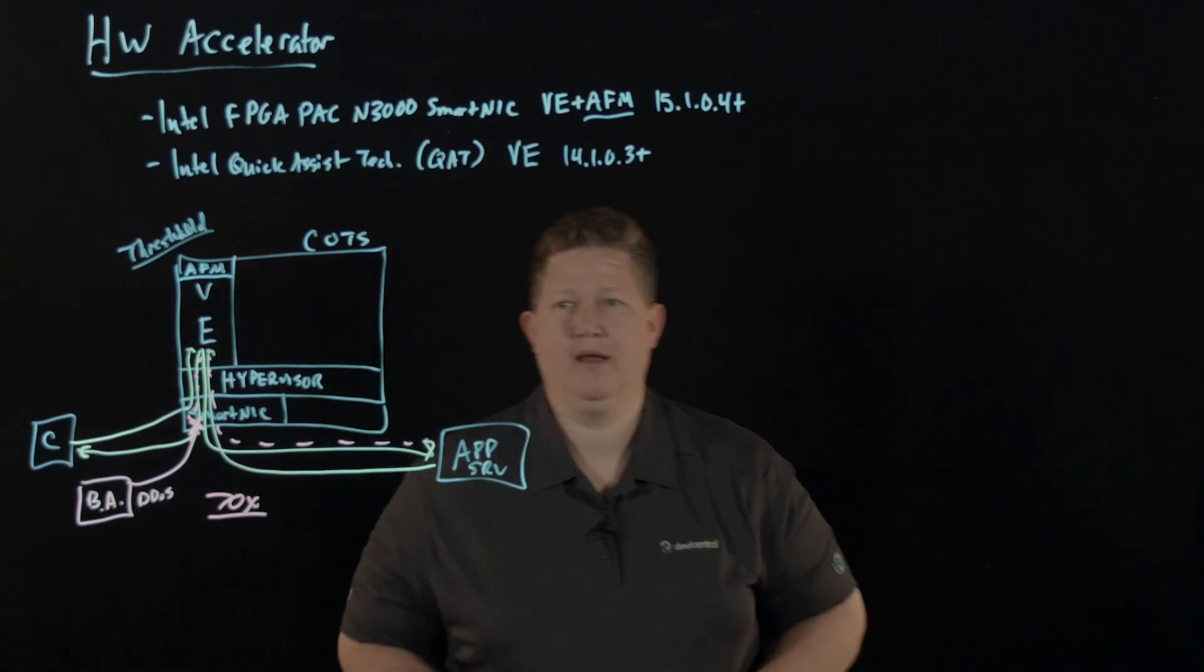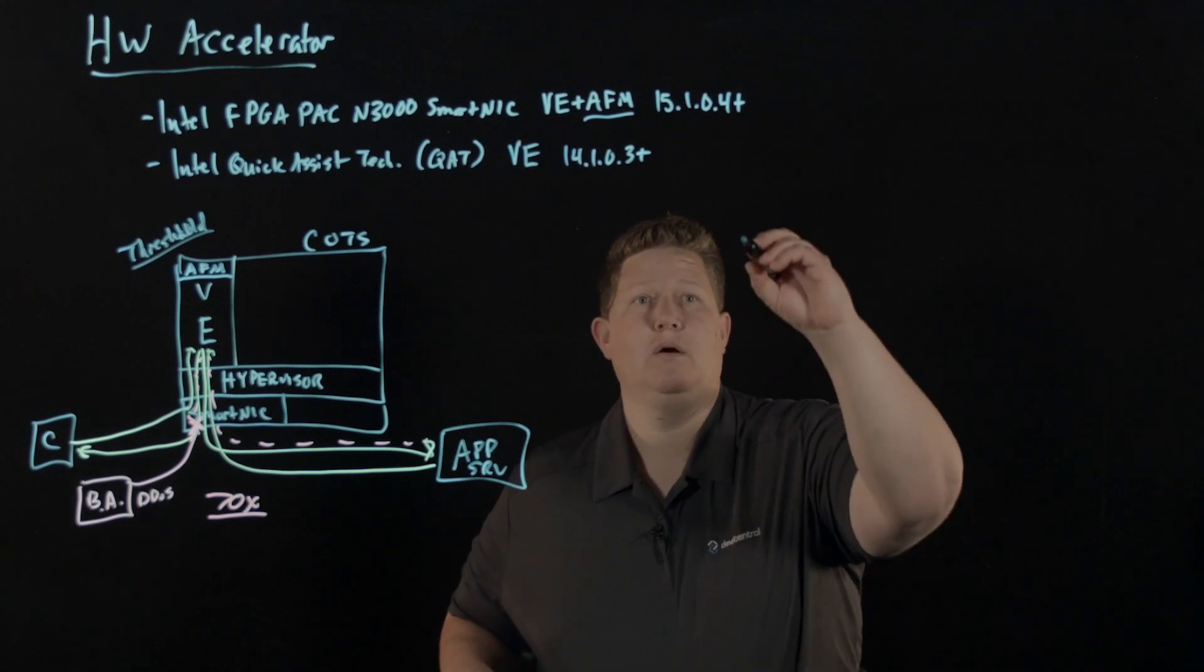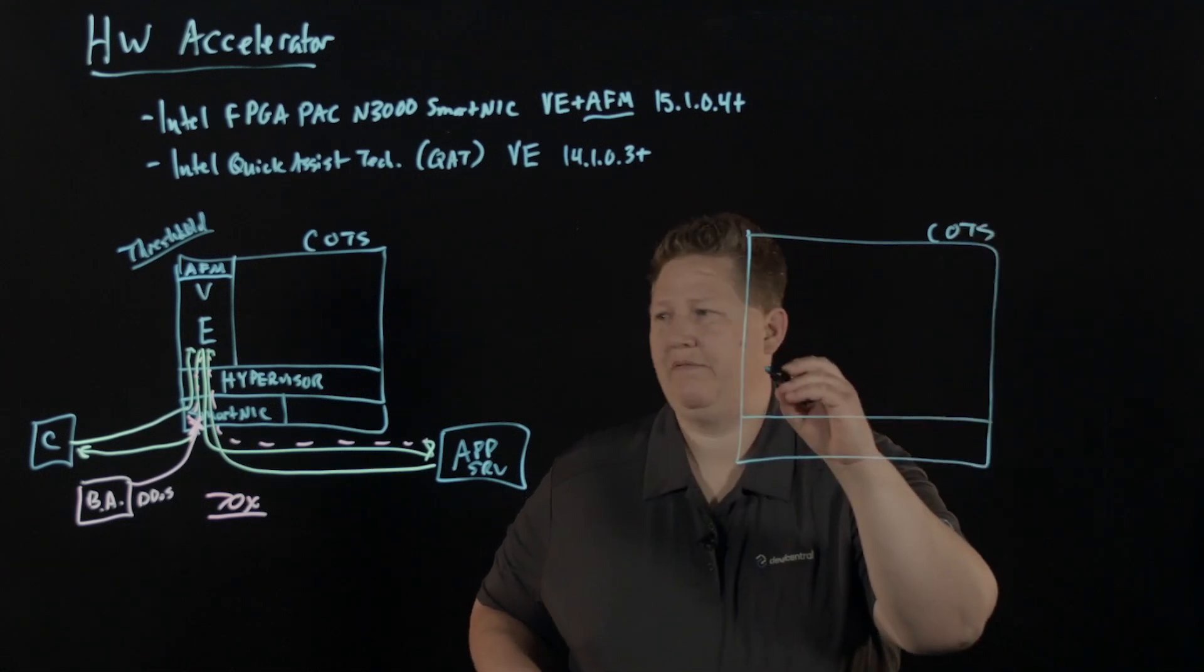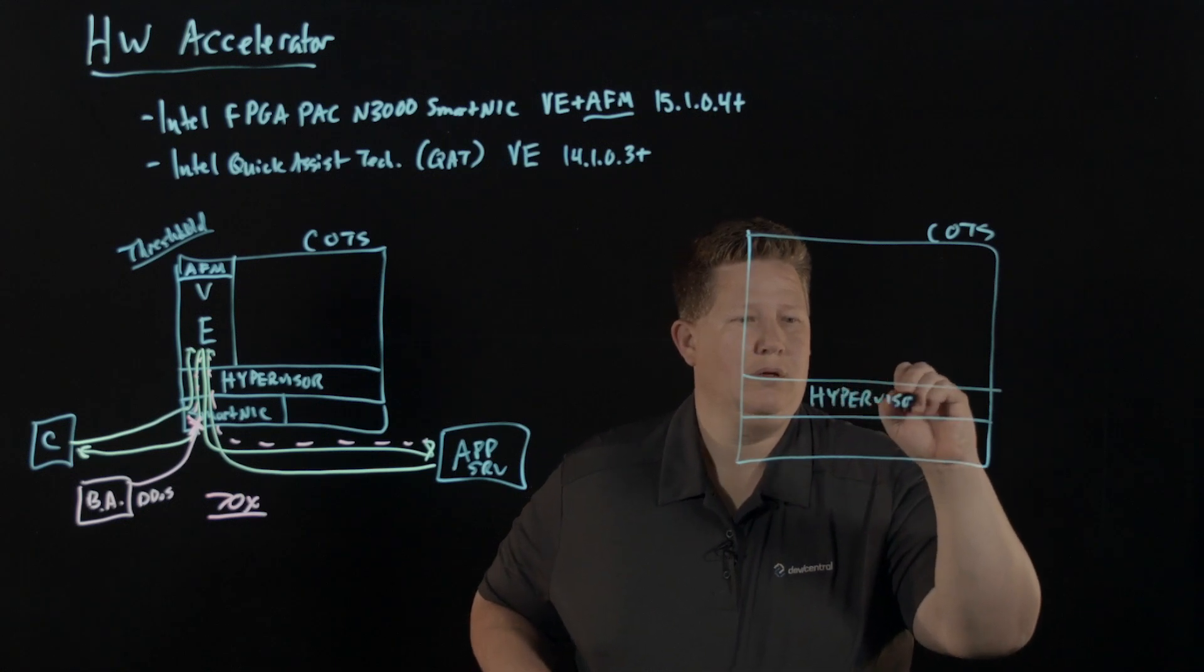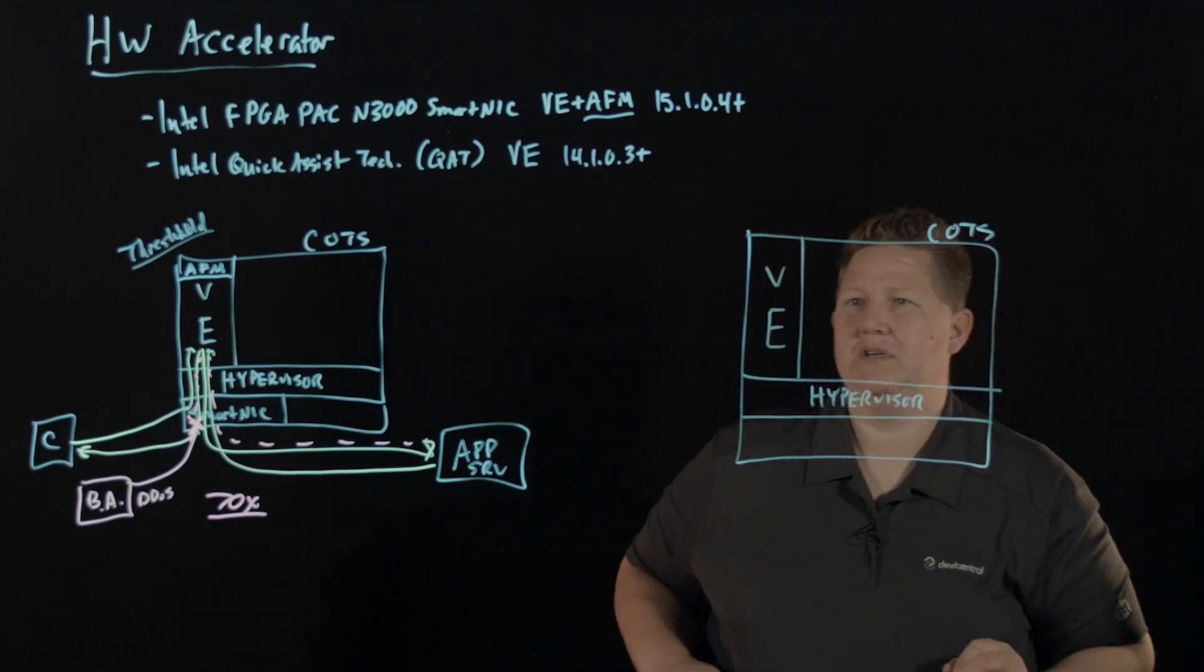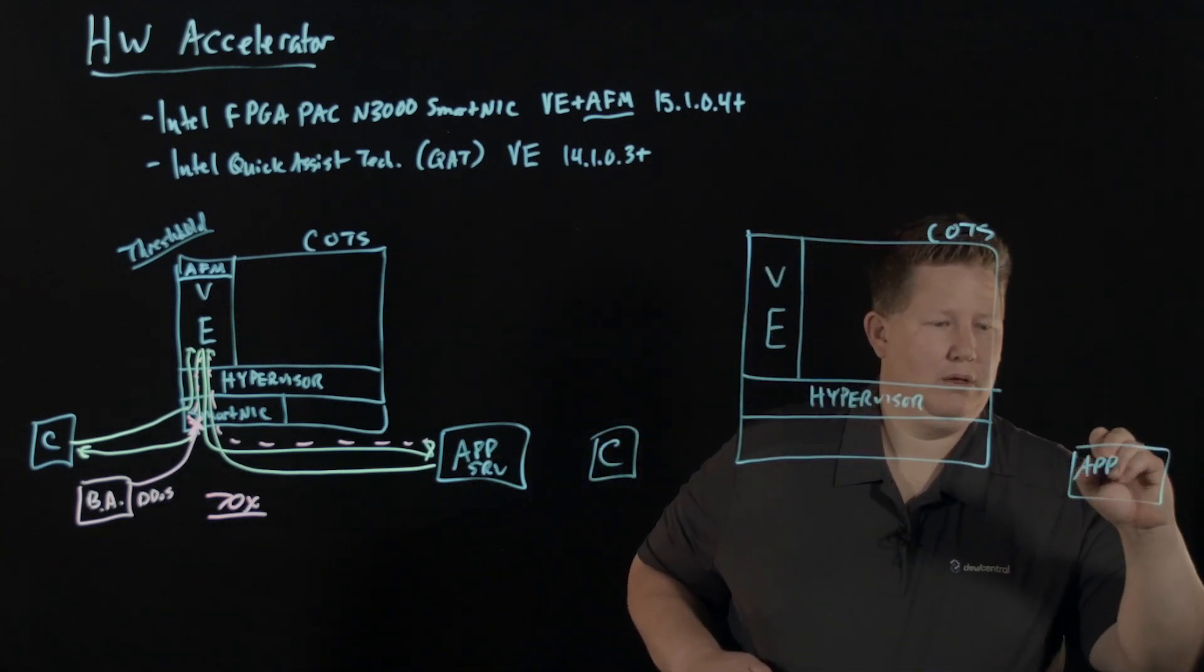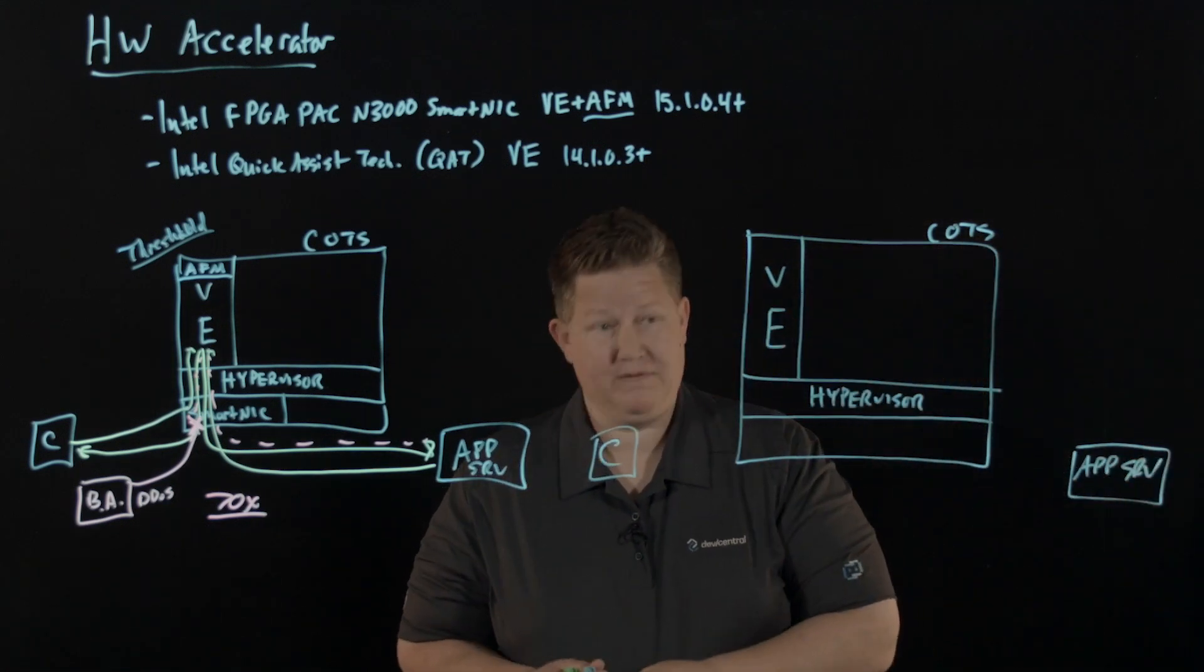Next up is the Quick Assist Technology. And this is also a hardware accelerator on a COTS server. So we've got this and we'll build our hypervisor in here. And then one of the running virtual servers is BigIP VE. We have clients out here and we have app servers out here.